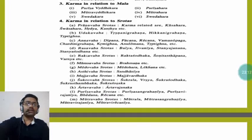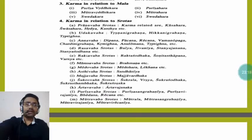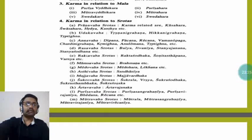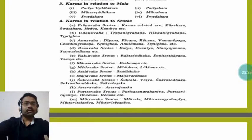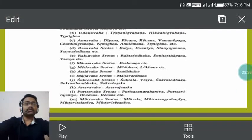Annavaha Srotas include Deepana, Pachana, Rechana, Vamanopaga, Chardanigrahana, Krimighna, Anulomana, and Triptighna. Rasavaha Srotas include Balya, Jivaniya, Stanyajanana, and Stanyashodhana.